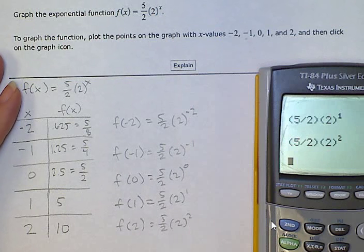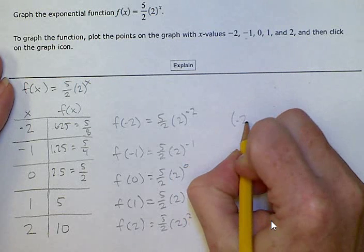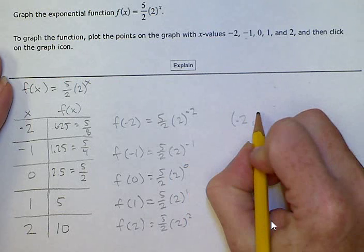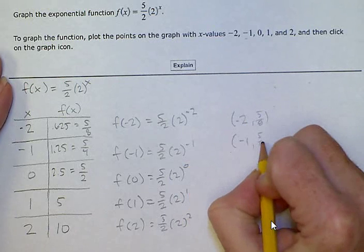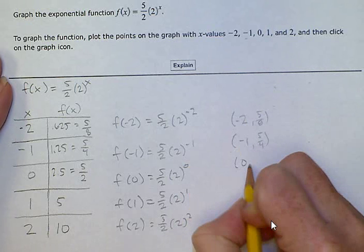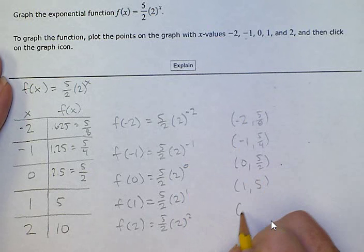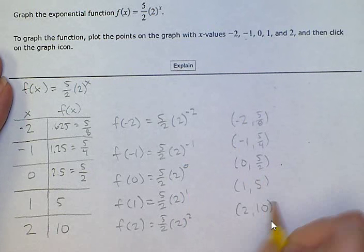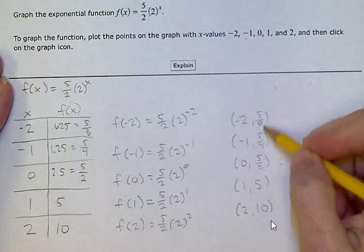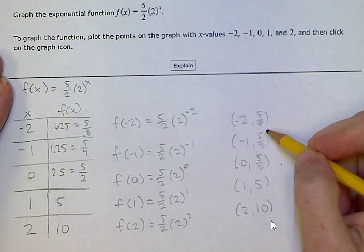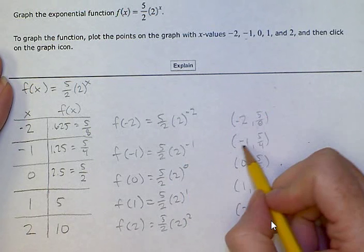So now we have these points — x and f(x), which is our y answer. These are the coordinates of the points we're going to plot. Make sure you use the plotting tool that gives you an exact point for the fractions, and plot all 5 points.